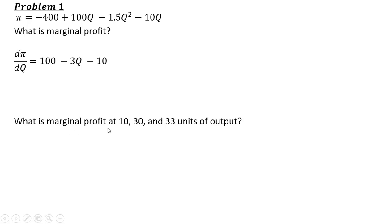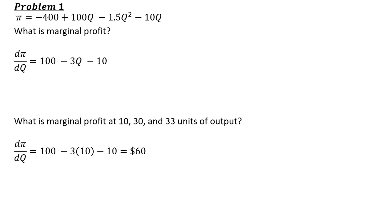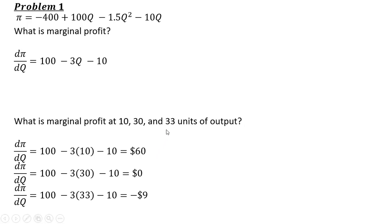Let's find out what marginal profit equals at different values of output: 10, 30, and 33. At 10 units of output, marginal profit is sixty dollars — producing the tenth unit increases profit by sixty dollars. At 30 units, marginal profit is zero, so producing the 30th unit neither increases nor decreases total profit. At 33 units, marginal profit is negative nine dollars, meaning producing that 33rd unit reduces the firm's profit by nine dollars.